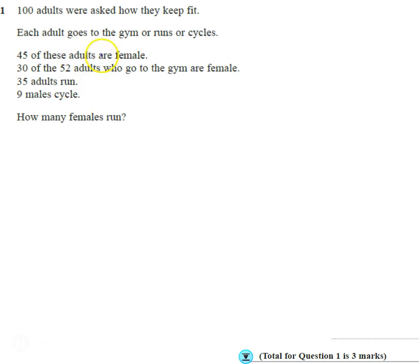We're giving you lots of information here, and the key bit is that it's an or or an or. So they go to the gym or run or cycle. If there was an and involved, then we might be possibly looking at a Venn diagram.